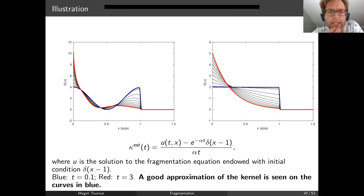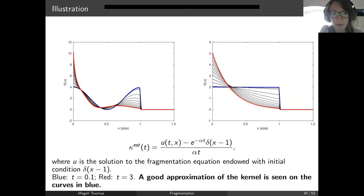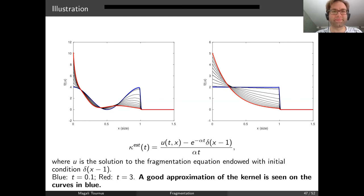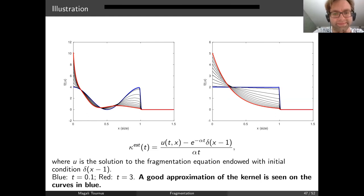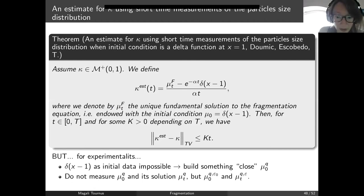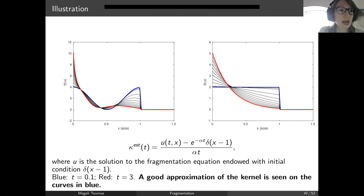The conclusion is that we can recover the kernel from early-time measurements, provided we start with an initial condition close to a delta function at x=1. Experimentally, it is not possible to have an exact delta function — having all particles the same size would require tracking them individually. But we can prepare a suspension where particles have almost the same size. We proved that you can recover kappa starting not with a delta function but with an approximation of one.